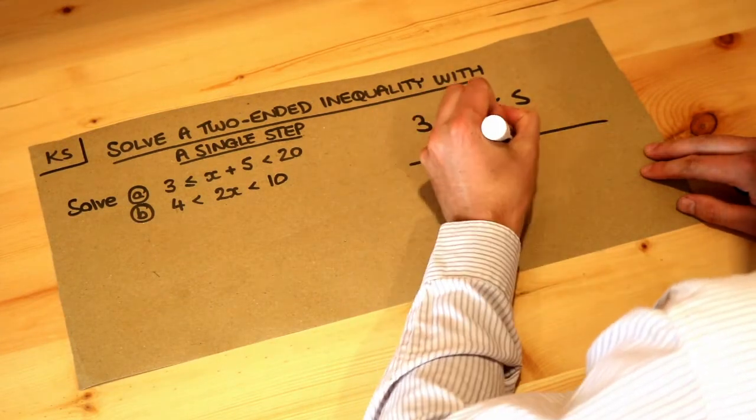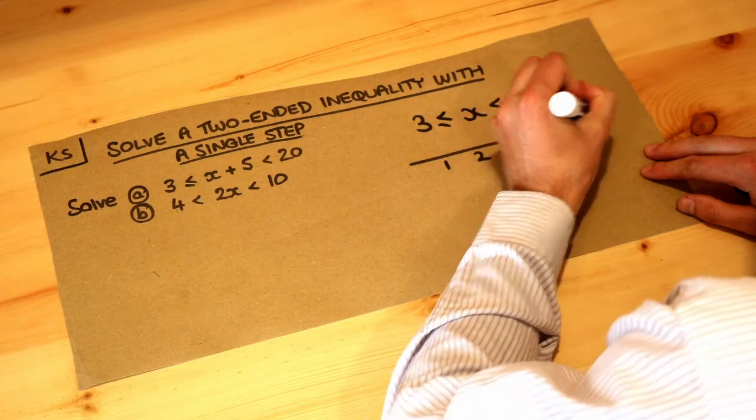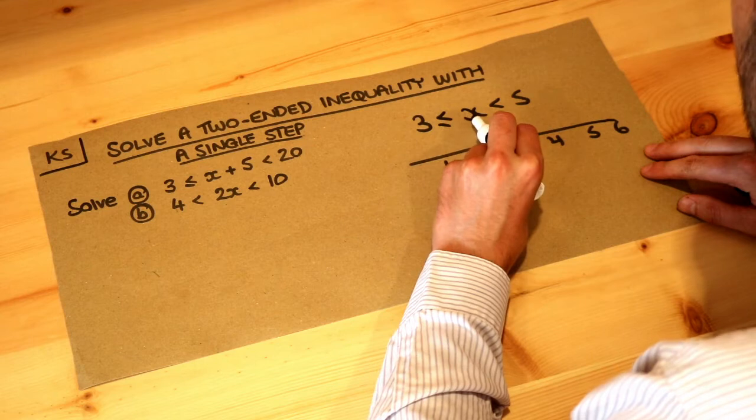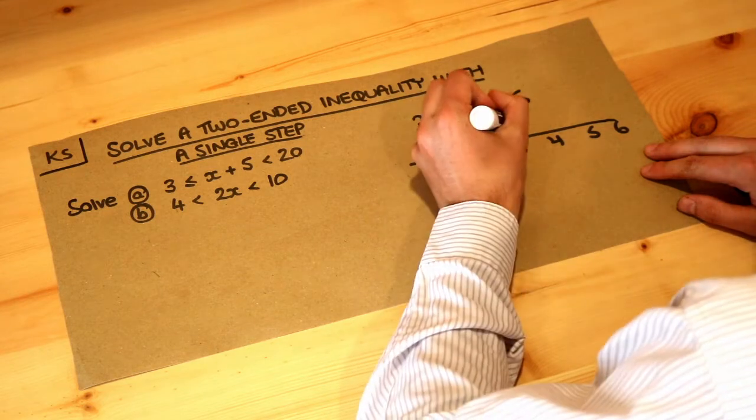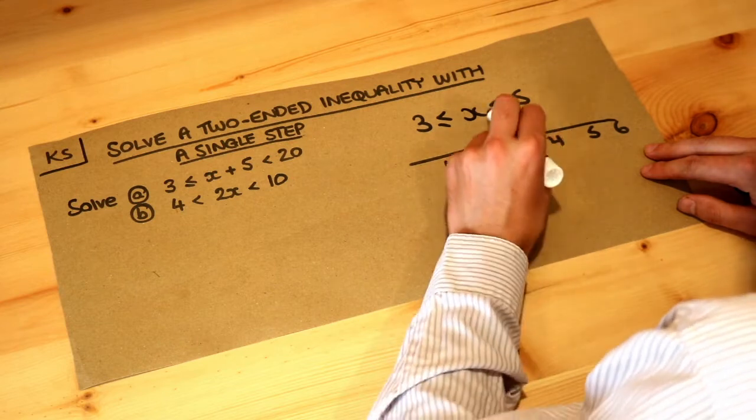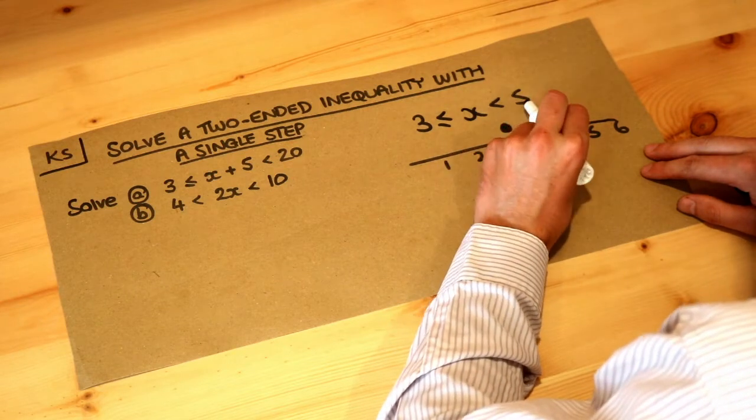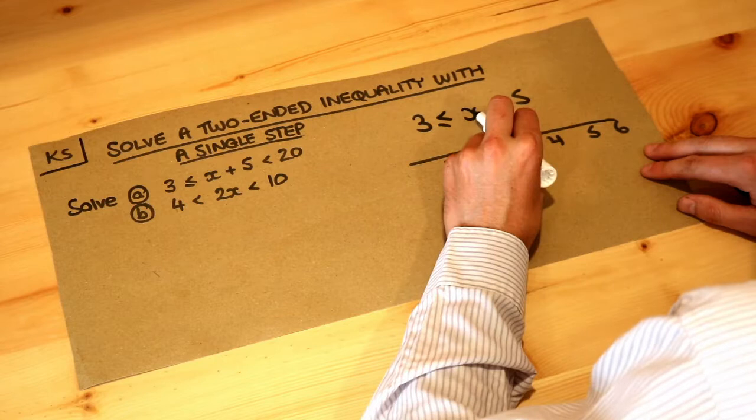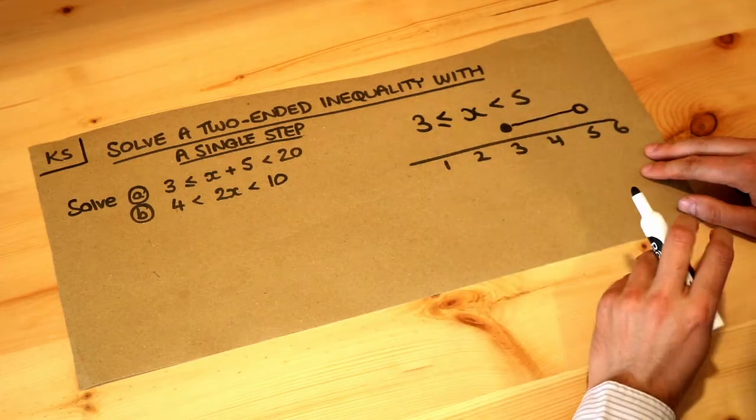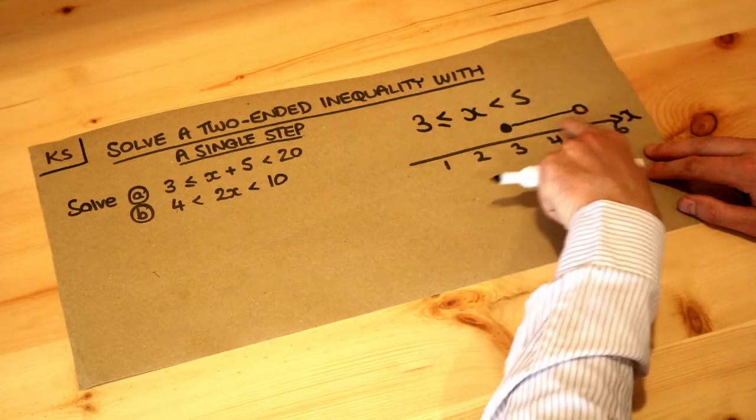If I had like 1, 2, 3, 4, 5, 6, then we're saying that x could be anything greater or equal to 3, so we put a filled dot there on 3, and x can be anything up to but not including 5, so anything less than 5. So we put an open circle and basically x could be anything between these two values.